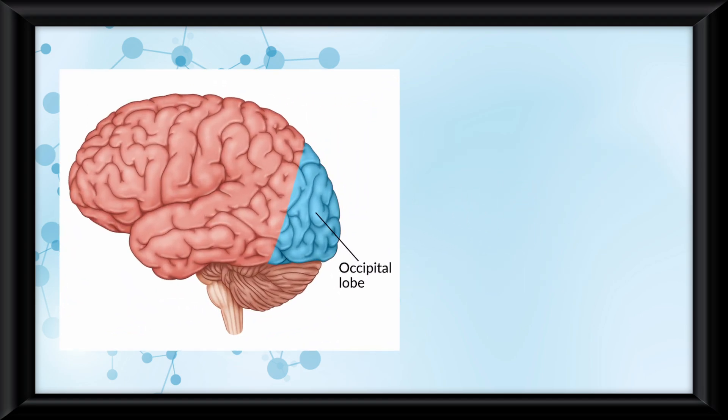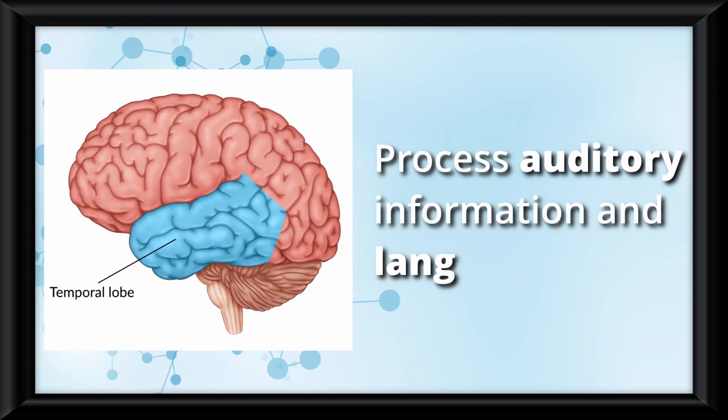Occipital lobes, located at the back, process vision. Temporal lobes, located on the sides, process auditory information and language.